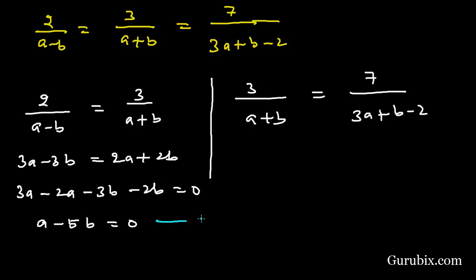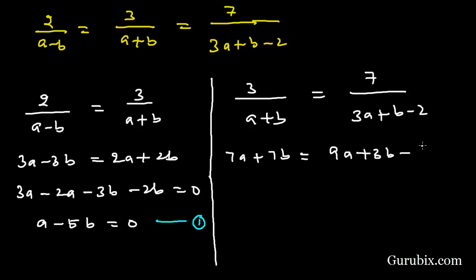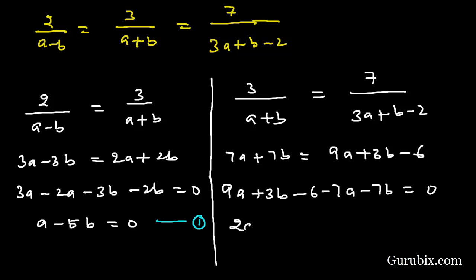From 3 over (A plus B) equals 7 over (3A plus B minus 2), if we cross multiply, we have 7A plus 7B equals 9A plus 3B minus 6. This means 9A minus 7A plus 3B minus 7B minus 6 equals 0, which gives us 2A minus 4B equals 6. Suppose this is equation number 2.